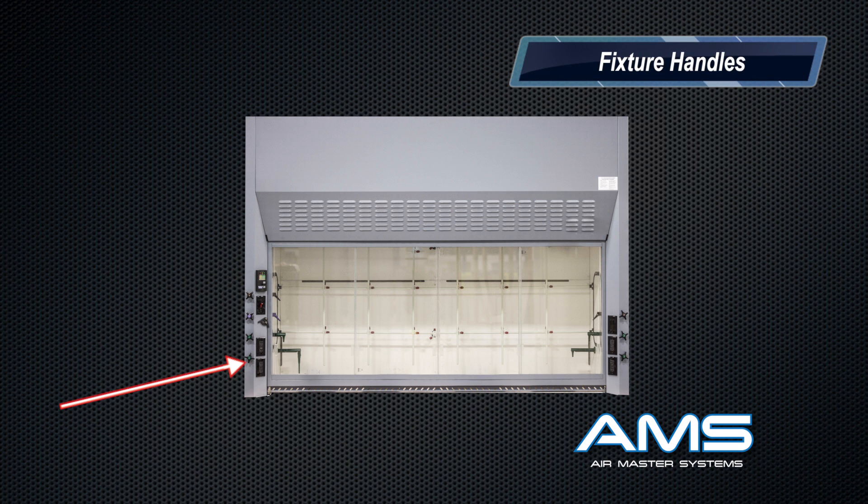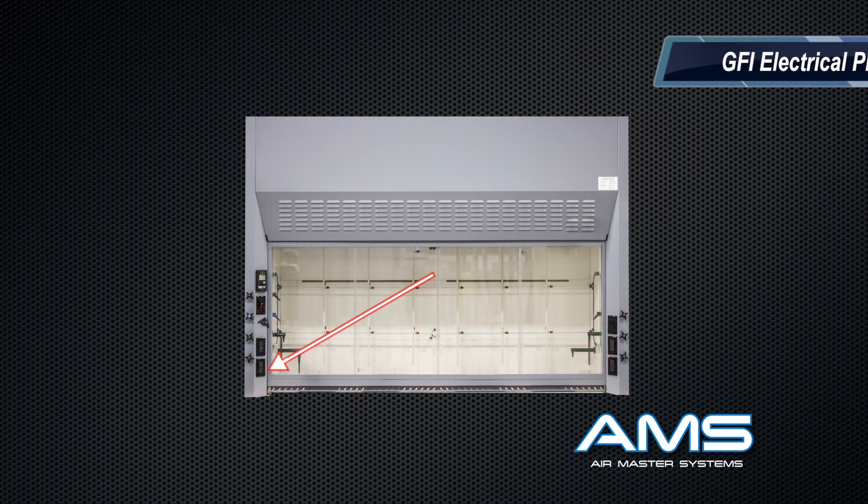The fixture handles on the front of your fume hood control the services on your fume hood. These are individually labeled with the appropriate services. The angle fixtures that are inside of your fume hood are designed to connect the hoses to them for experiments. If your hood has a blower switch this will turn your fume hood on and off. Fume hoods have several GFI electrical plugs for using with equipment.